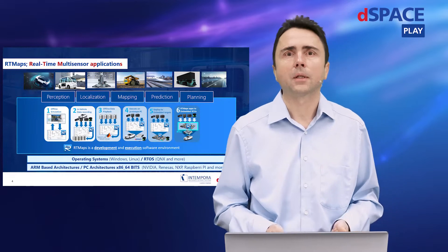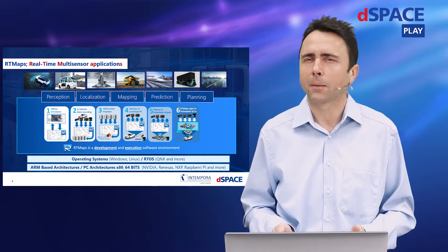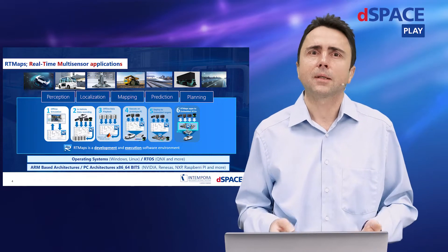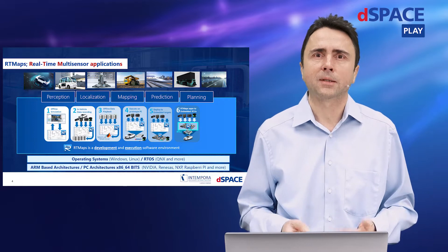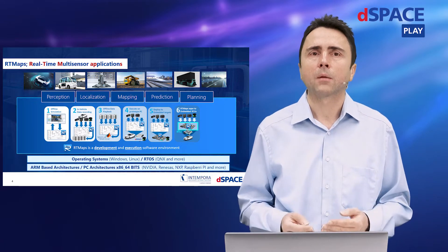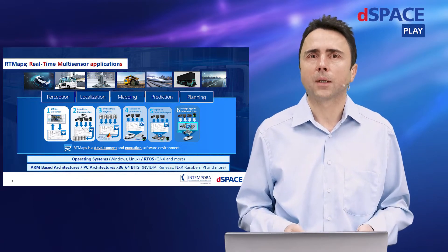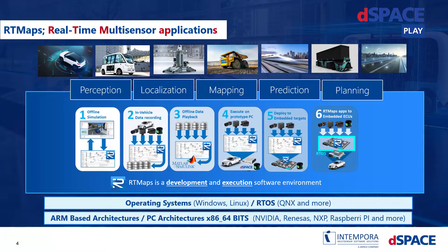Artimaps is not about things like maps or HD maps. It is an acronym and stands for real-time multi-sensor applications. You are in the right place when developing applications or functions which deal with sensor data. It could be perception, data fusion, localization, mapping, prediction, or planning algorithms.